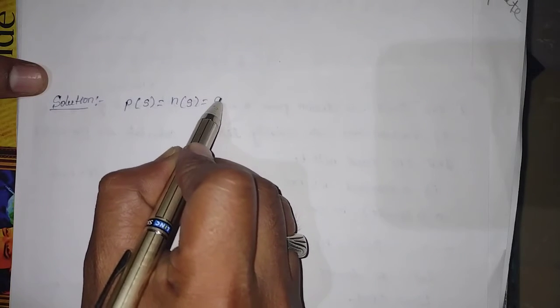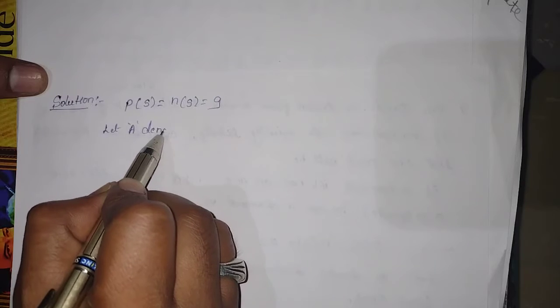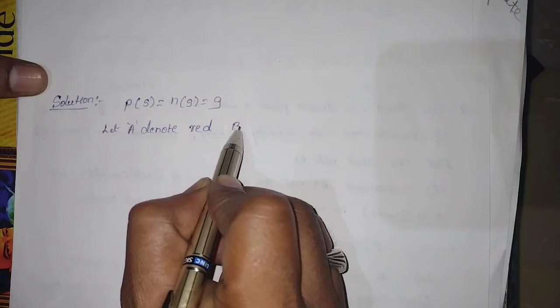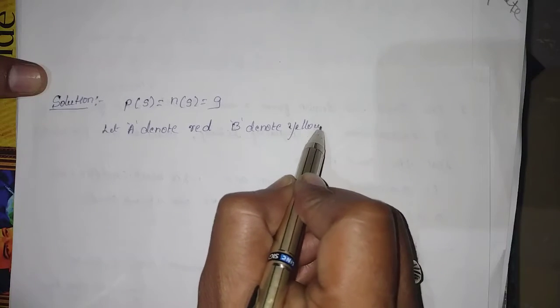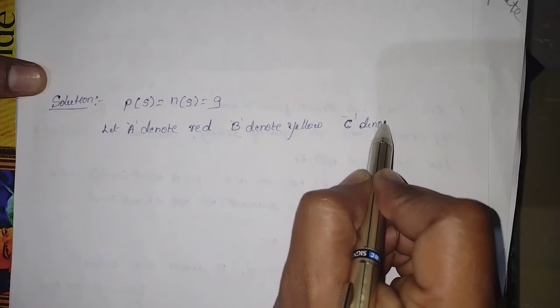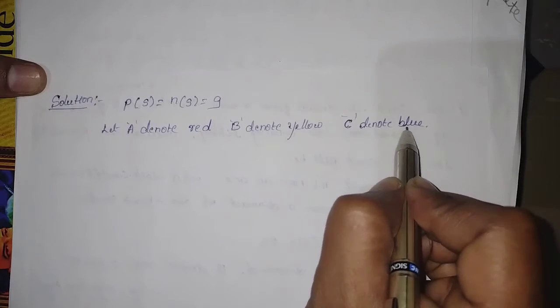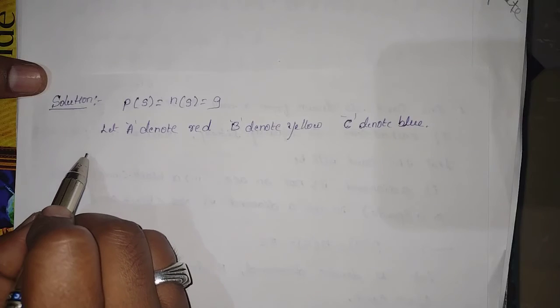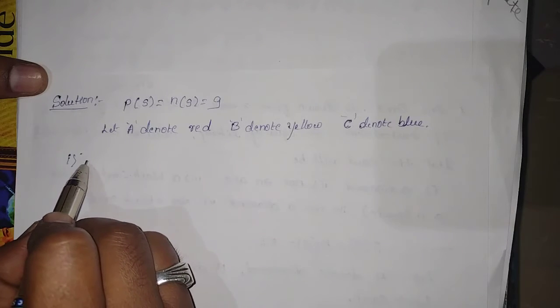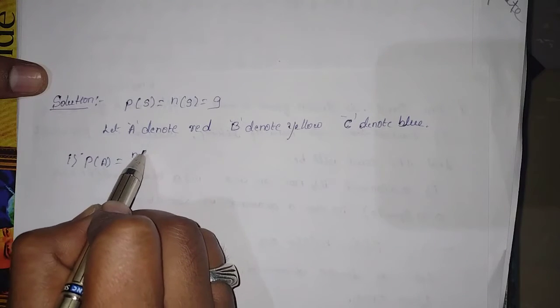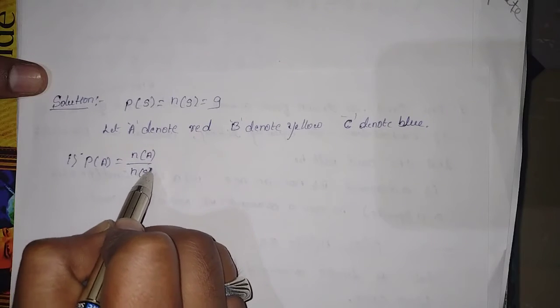The sample space has n(S) = 9 discs. Let A denote red, B denote yellow, and C denote blue. For the first question — red: P(A) = n(A) / n(S) = 4/9.